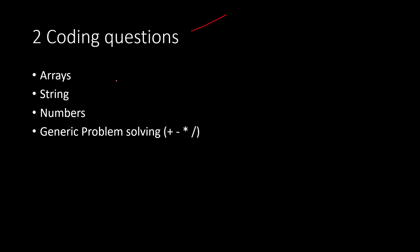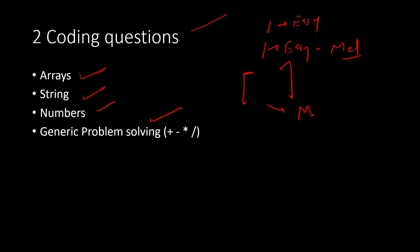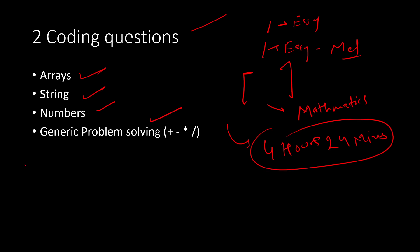Now let's talk about the two coding questions. You will be getting questions from arrays, strings, numbers, and generic problems like addition, subtraction, multiplication, and division. Majorly, what I have seen is there are two coding questions — one is easy and one is easy-medium. Generally, some problem is given and you need to do some mathematical computation to solve it. For example, something is given in hours and minutes, say 4 hours and 24 minutes.